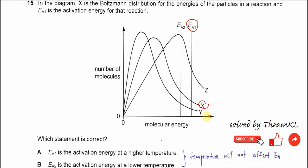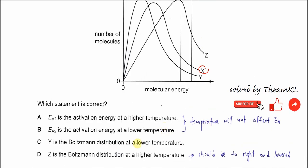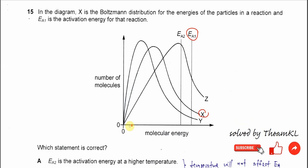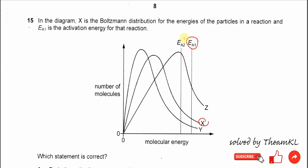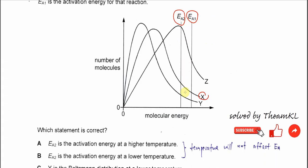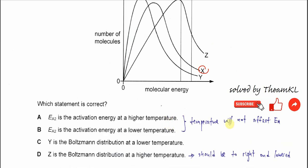Which statement is correct? Ea2 is the activation energy at higher temperature or lower temperature — these two statements are actually wrong because Ea1 and Ea2, all activation energies, are not affected by temperature. So A and B are wrong. Temperature will not affect the Ea; only a catalyst will affect it. So the answer cannot be A or B.